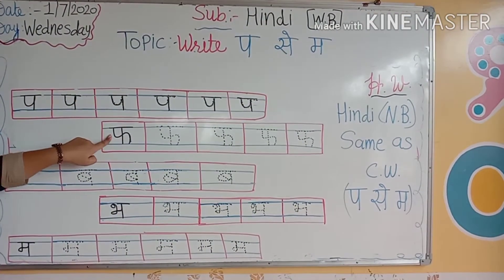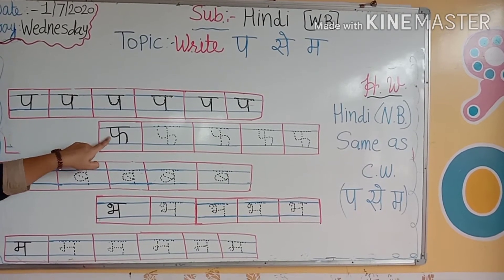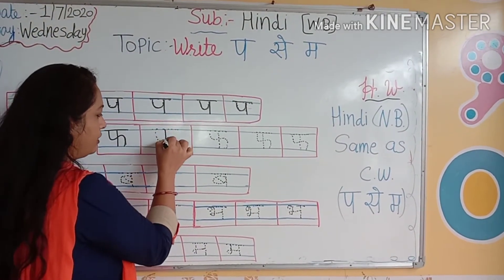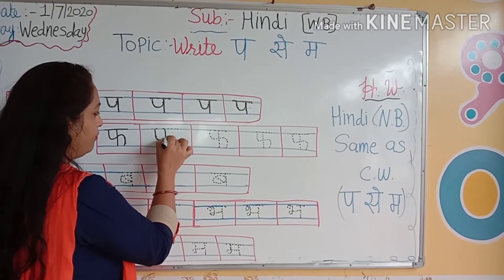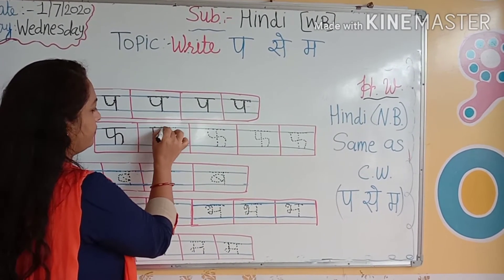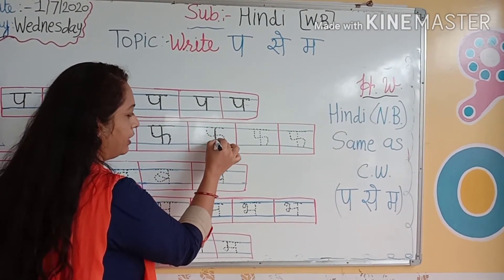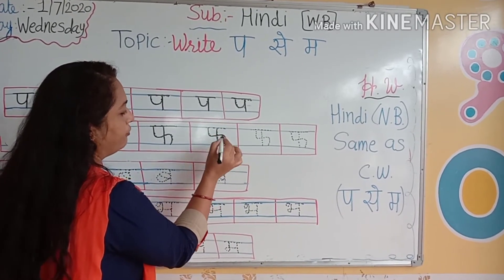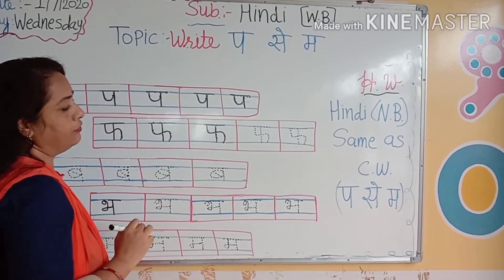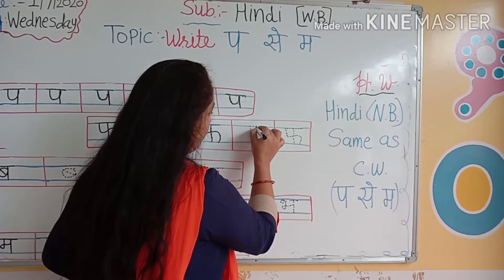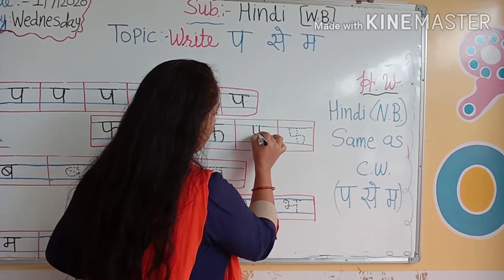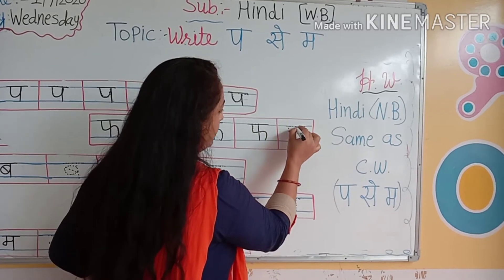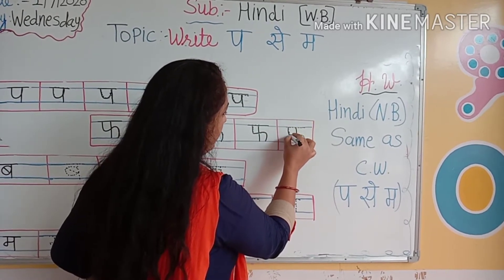Fo. Fo se kya hoga? Fo se fal. Fo se kya hota hai? Fo se fal. Fal khate hain na? Aapko achhe lagte hain fal? Haan, aur healthy bhi hote hain hamare liye. Fo se fal. Fo se kya hoga? Fal. Kids, you have to write with me. Par se fal.